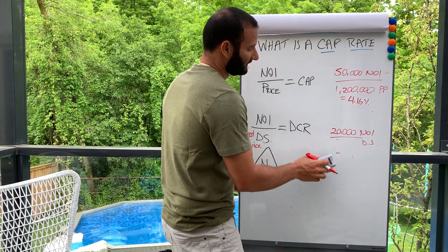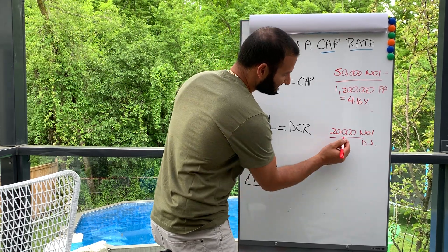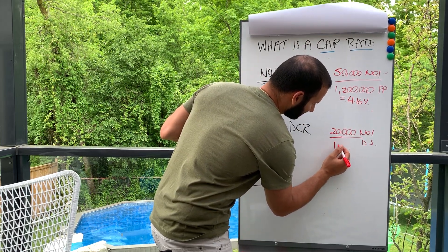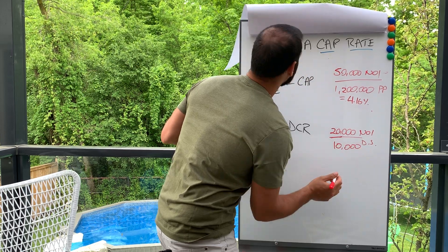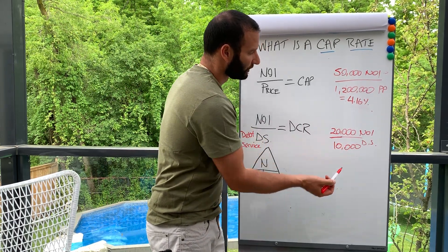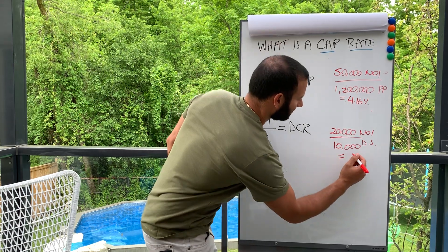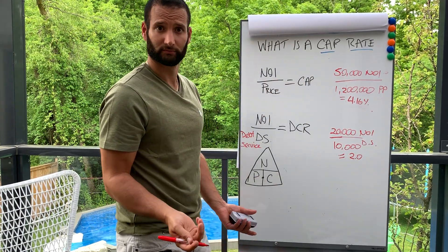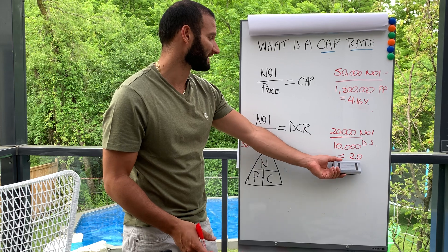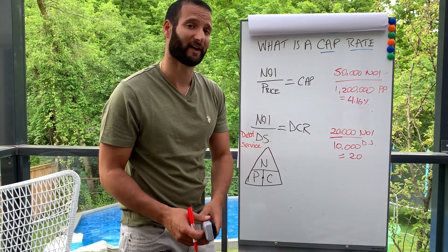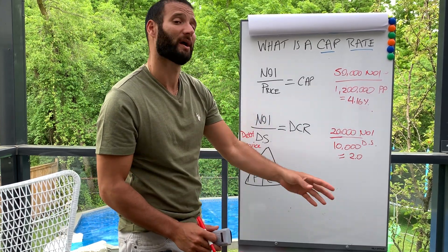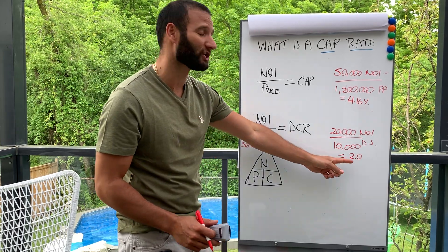Let's use a different scenario: your NOI stays at twenty thousand, but your debt service is ten thousand. We take twenty thousand divided by ten thousand — that gives us two. Your net income is double your debt service, giving you a coverage ratio of two. That is fantastic. Are you going to get financing? Yes! Should you buy this property? Absolutely — that's a great debt coverage ratio.